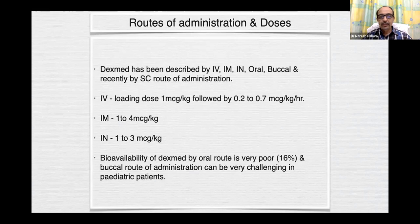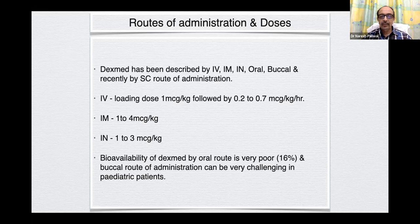Routes of administration and doses: dexmed has been described by almost all routes except rectal — intravenous, intramuscular, intranasal, oral, buccal, and recently subcutaneous. Intravenously: loading dose 0.5 to 1 mcg per kg followed by 0.2 to 0.7 mcg per kg per hour. Intramuscularly: 1 to 4 micrograms per kg. Intranasally: 1 to 3 micrograms per kg. Bioavailability by oral route is very poor, so oral route is not recommended, and buccal route can be very challenging in pediatric patients.